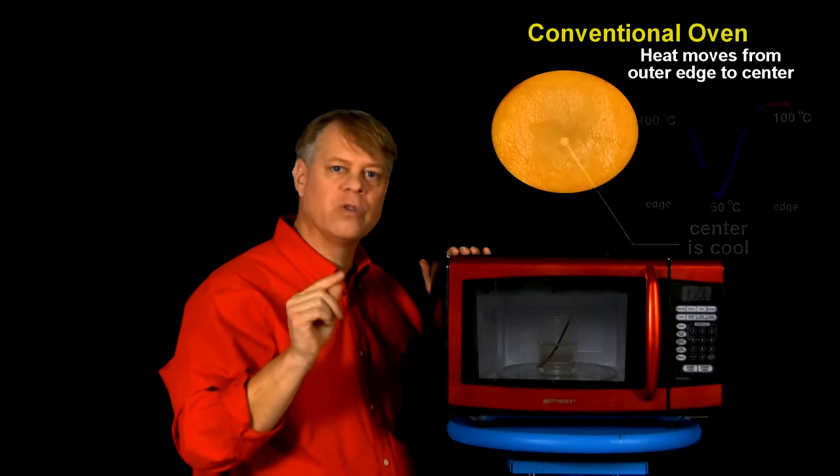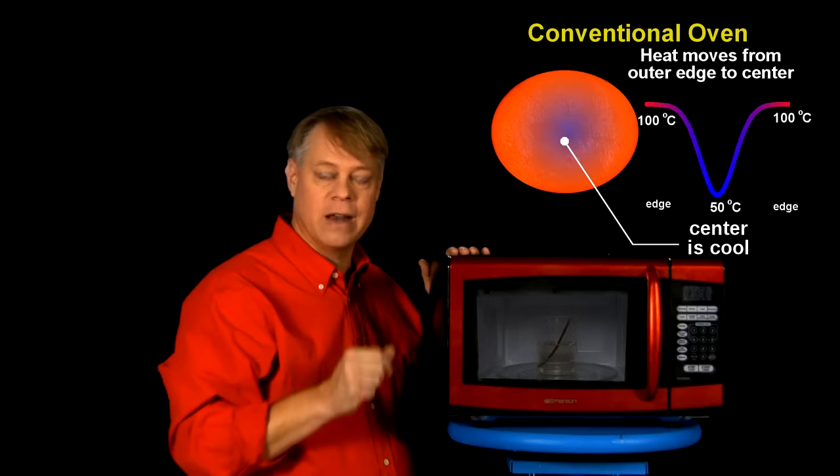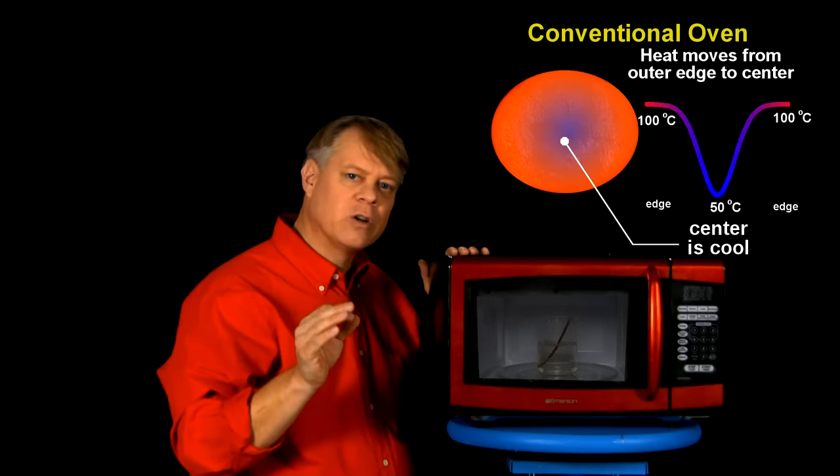In a traditional oven or stove, we heat food by placing a pan on a burner, or in the oven where the walls radiate heat, which cooks the outside of the food. The insides cook when heat transfers from the surface of the food to its interior.